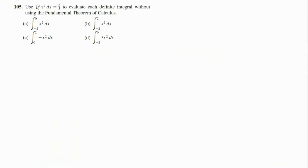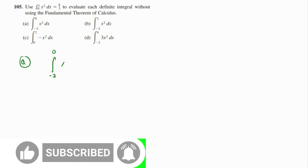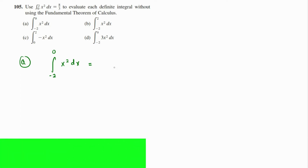In this question, we're going to evaluate all of these different integrals without using the Fundamental Theorem of Calculus. We're going to use the properties of definite integrals. The first one is the integration from negative two to zero of x squared dx. This can actually be written differently if we consider x squared.